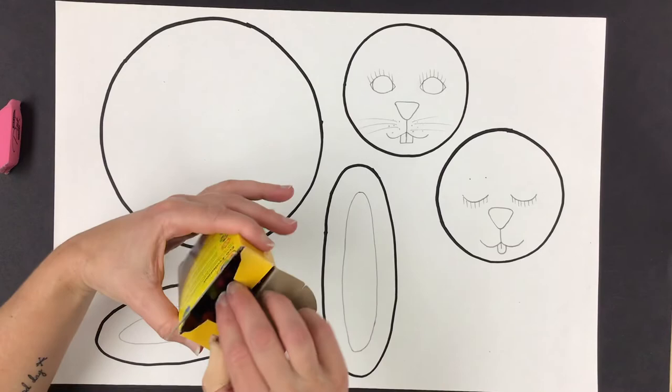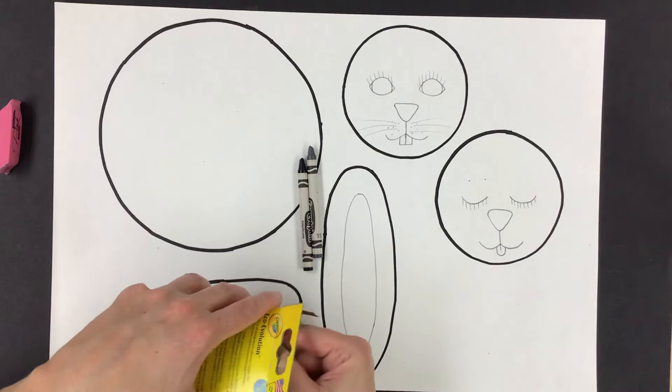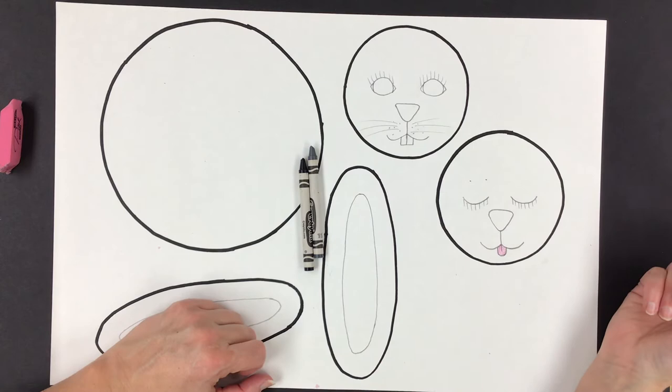Let's start coloring. Open up your crayons and pull out the black and the gray crayons. You will only need pink if you made a tongue. I'll color in that tongue now.